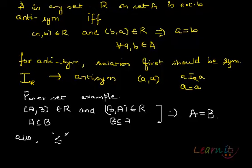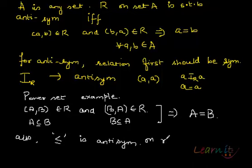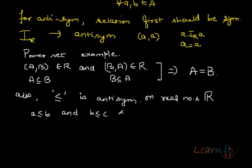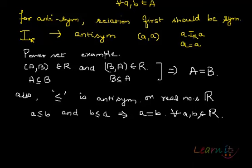Also, the less-than-or-equal-to relation on natural numbers is anti-symmetric: if A is less than or equal to B and B is less than or equal to A, then A must equal B for all A and B. This is what we mean by an anti-symmetric relation.